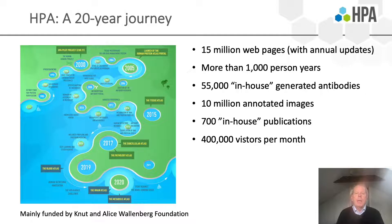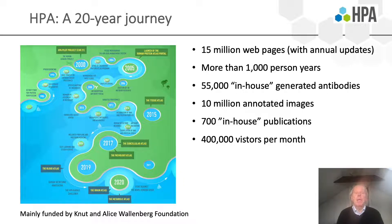More than 1,000 person years have been involved in this effort, and we have generated 55,000 antibodies and 10 million annotated images. We are very proud to have published more than 700 papers and are very happy to have about 400,000 visitors per month to the open access resource.